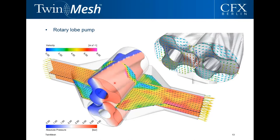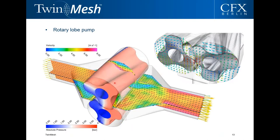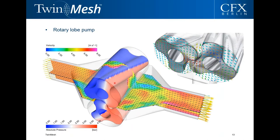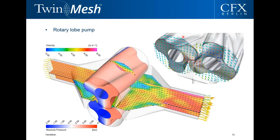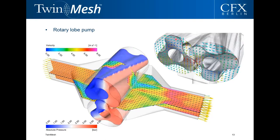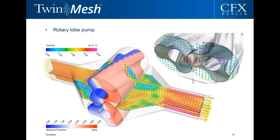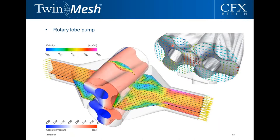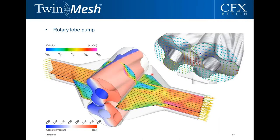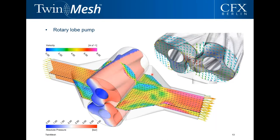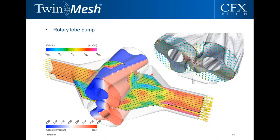This animation shows a rotary lobe pump with twisted rotors. The flow field is visualized on different cross sections within the pump, and in the top-right animation vectors show the flow field within the axial clearance. Once you have the solution, you can examine each distinct position within your machine and evaluate the flow quantities.